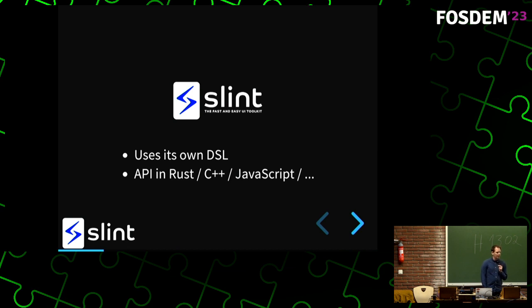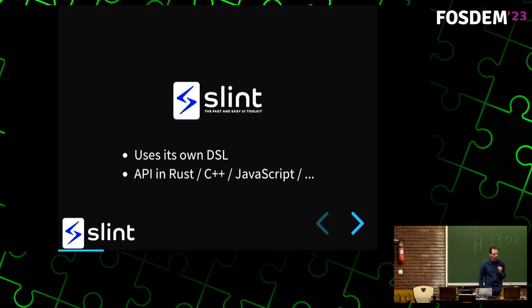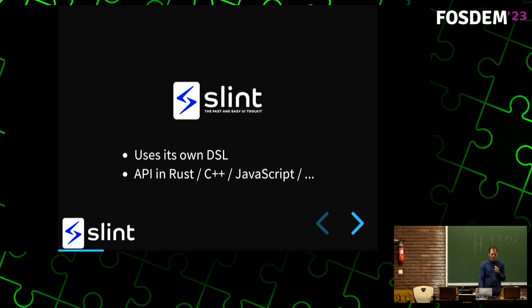Slint uses its own domain-specific language, like a macro. You might say, I wanted to develop in Rust, and now I need to learn a new language to do UI — and yes. But fortunately, learning this language is not more difficult than learning the API of any other library. Rust is not really meant for UI; there are many ways it's too explicit where for UI you just want to describe things declaratively. The DSL is only for describing the user interface — all the logic is written in a programming language like Rust. We also have bindings to C++ and JavaScript, and we tend to add more.